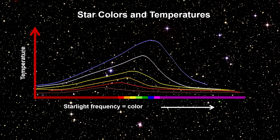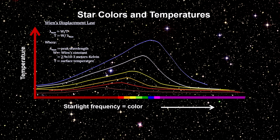So the bottom line is, measure the color of a star by the frequency of the light it emits, and you've determined its temperature. It's that simple.